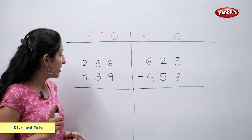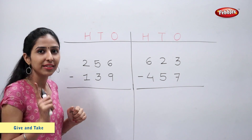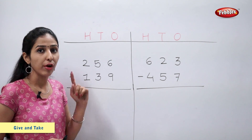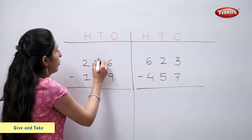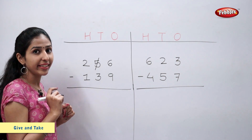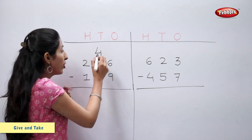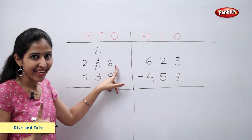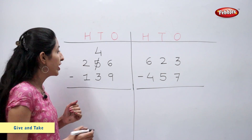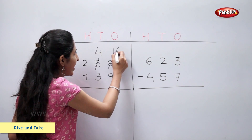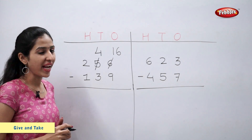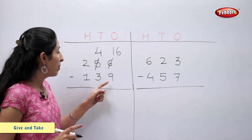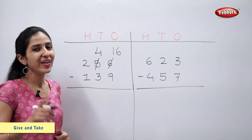We cannot subtract nine ones from six ones, so we will borrow one ten from the tens column. Five tens minus one ten is equal to four tens. Six plus ten is equal to sixteen, so this six becomes sixteen. Now we can subtract nine from sixteen. Sixteen minus nine is equal to seven.